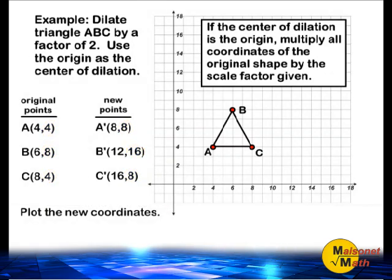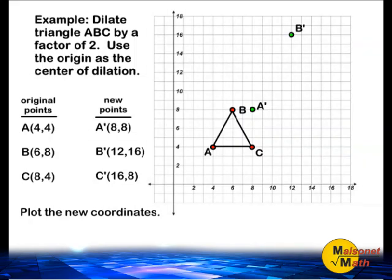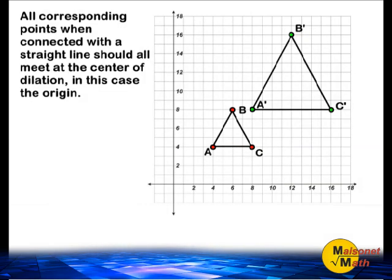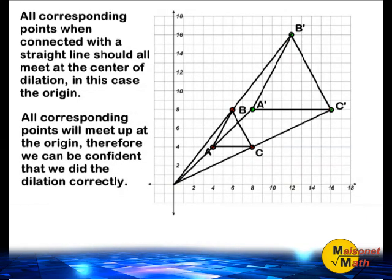Now we have the new coordinates of our dilated object. Simply find those coordinates, plot the points, and connect them with a straight edge. To check the accuracy of your dilation, simply take a straight edge and connect all corresponding points and see if that line, when extended, would intersect at the origin. We can see that connecting a line through point A and its dilated point A, when extended, does indeed intersect at the origin. The same is true for the corresponding points for B as well as for C.